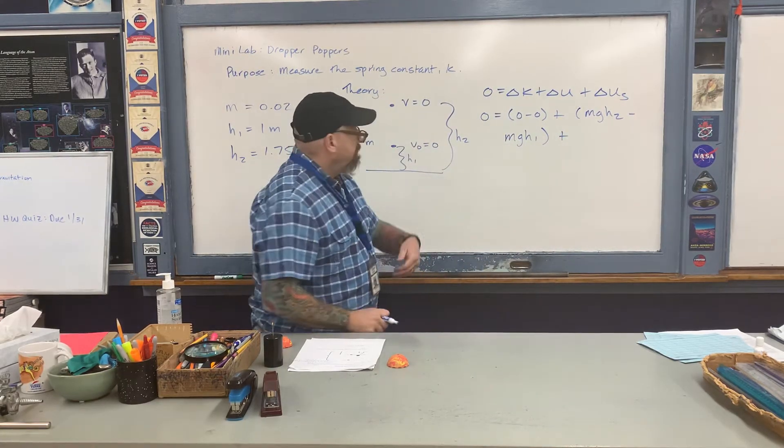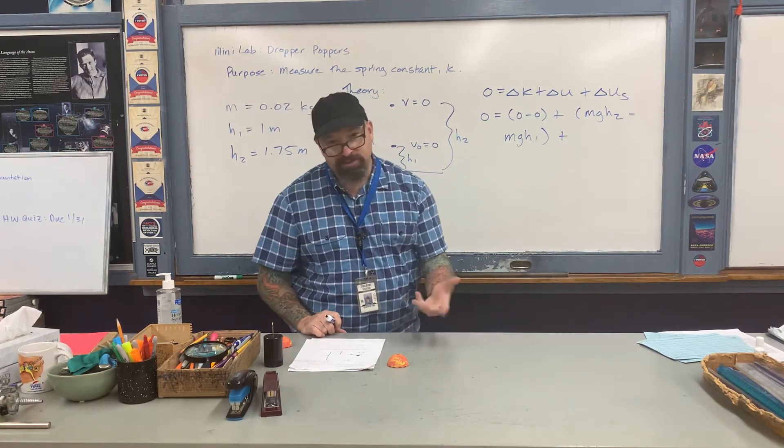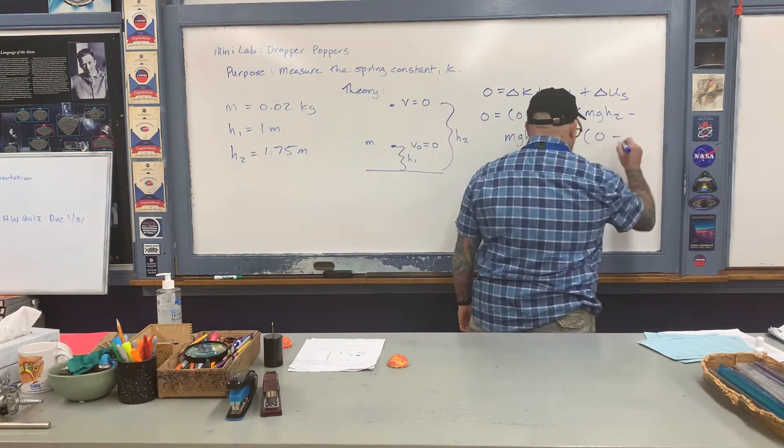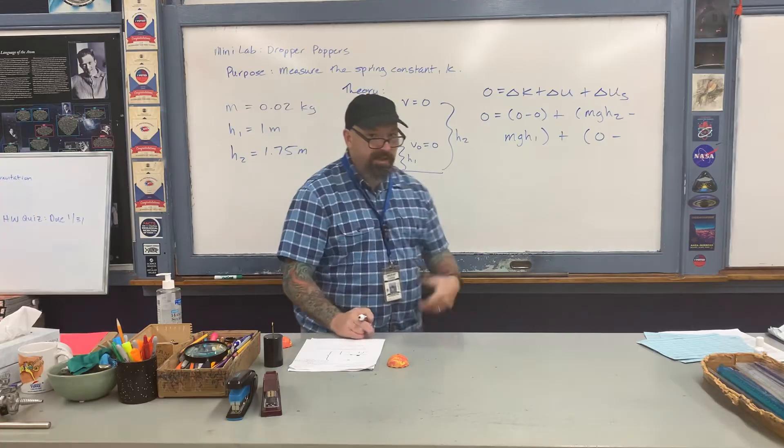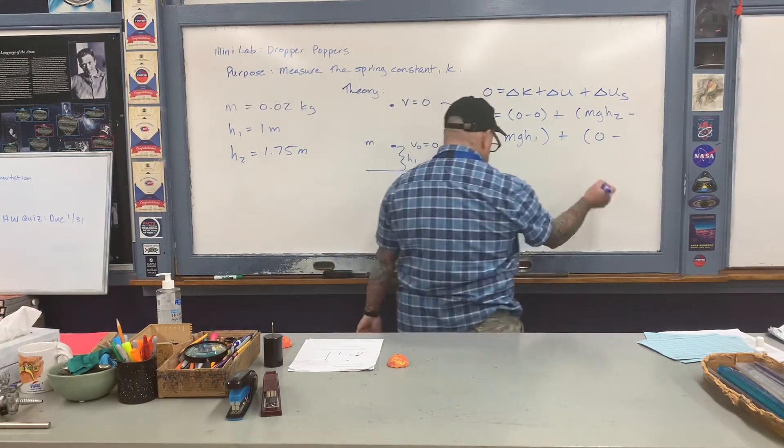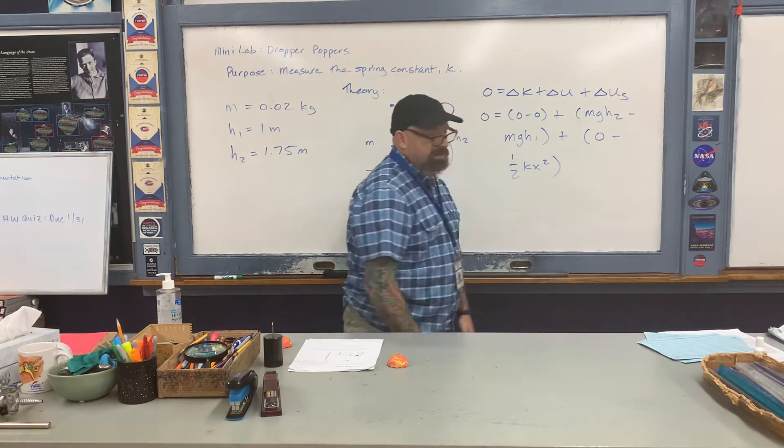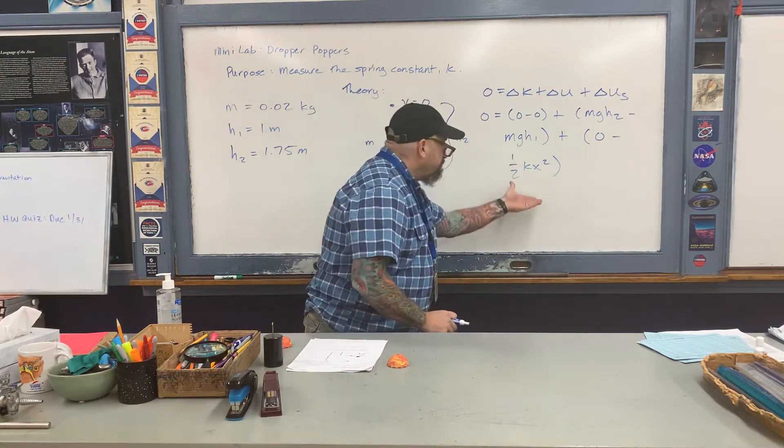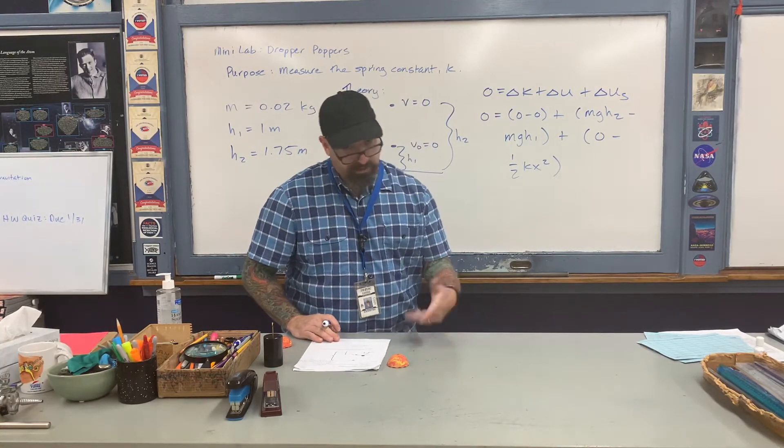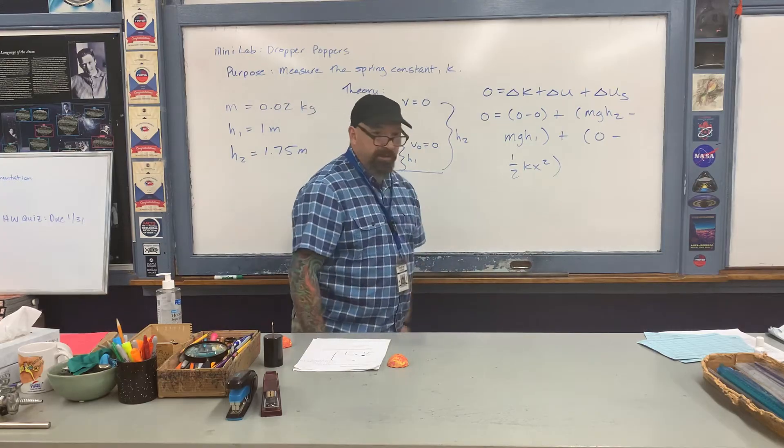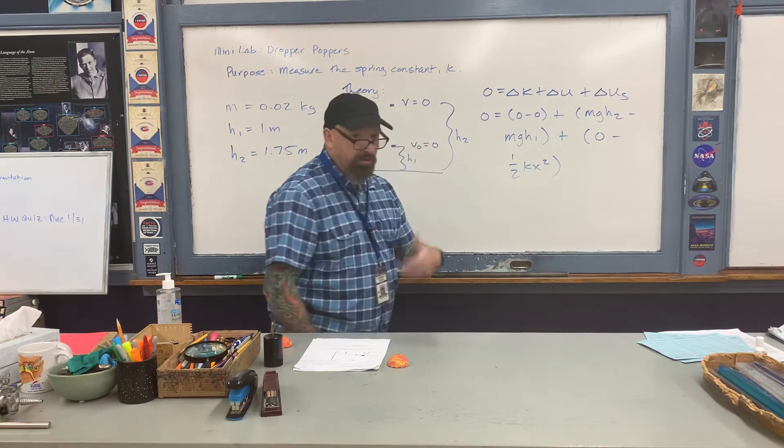Then we have change in spring potential energy. At the end of the process, the popper has already popped, so it has no spring potential energy. But initially when I've folded it and placed it here, it does have spring potential energy, which I'm going to write as one half kx squared. We're going to measure everything in this expression except the spring constant, then use the information to calculate the spring constant. I'm going to solve it for this term, one half kx squared.